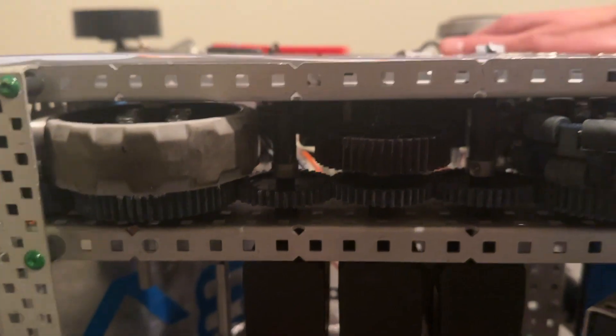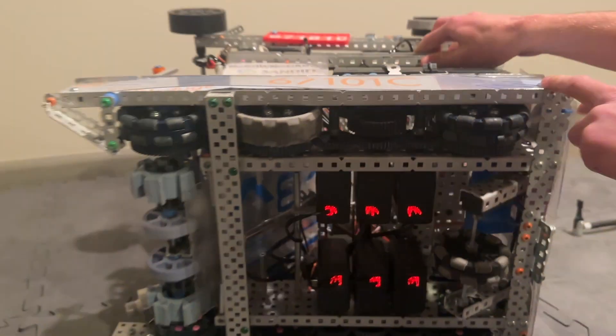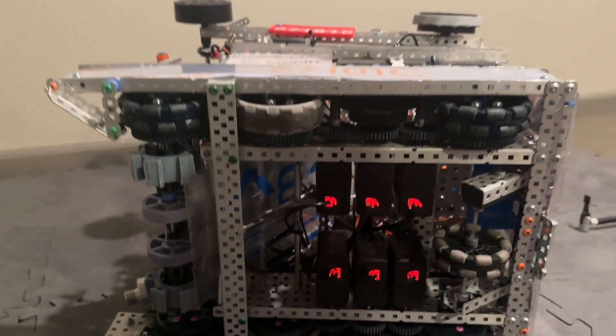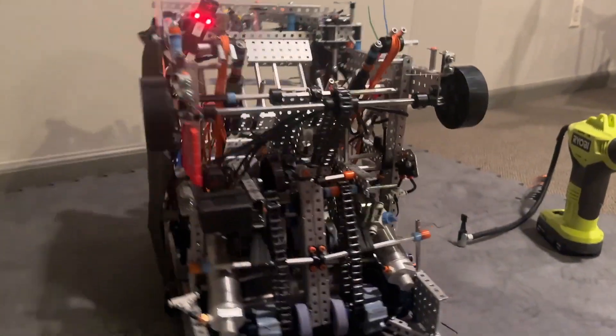This little 48 tooth gear is to help get over the barrier because it has a little bit more clearance than the actual metal does. Just gives us a bit more clearance so we can drive over the barrier going out of the logo.